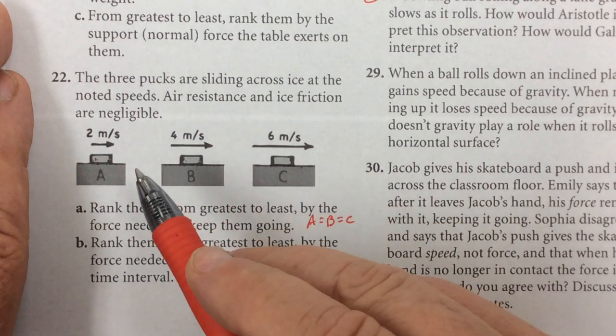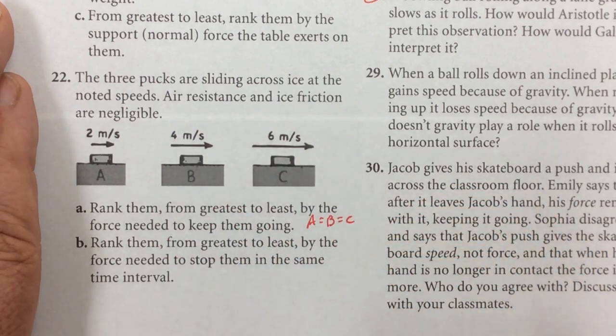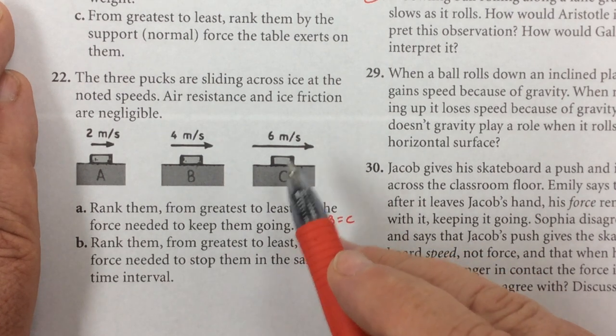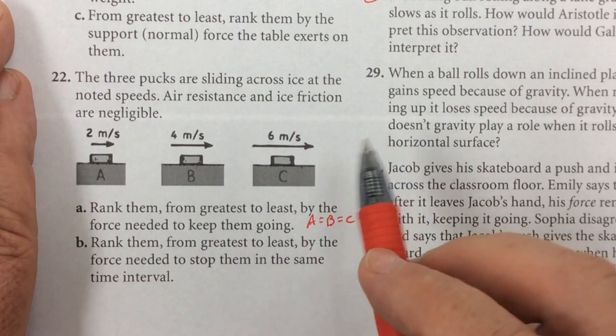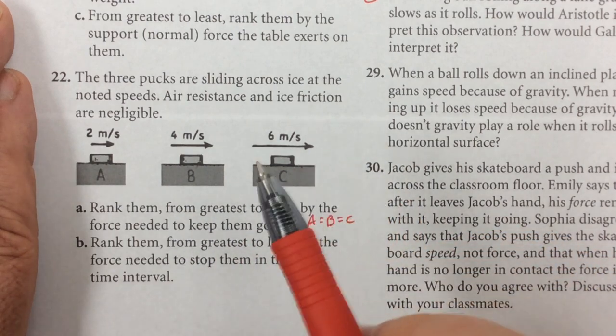So I assume the three pucks are of the same mass, but once you start getting into speed, you've got mass and speed together playing together. We're going to call that momentum later. Which would be harder to stop? What would you think?